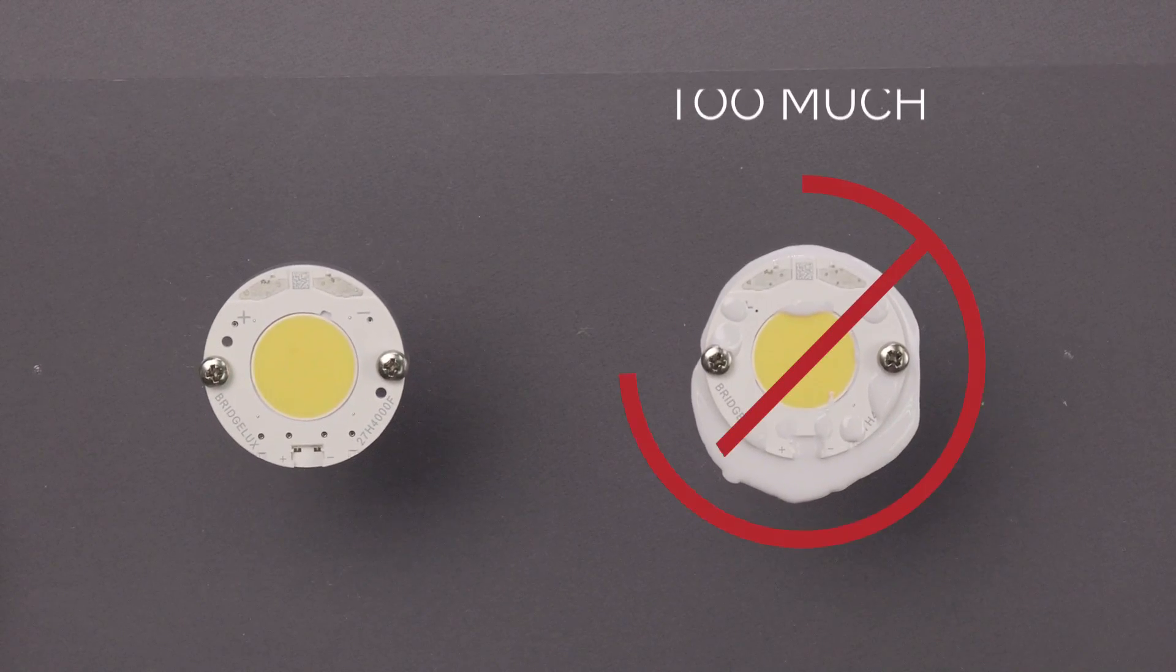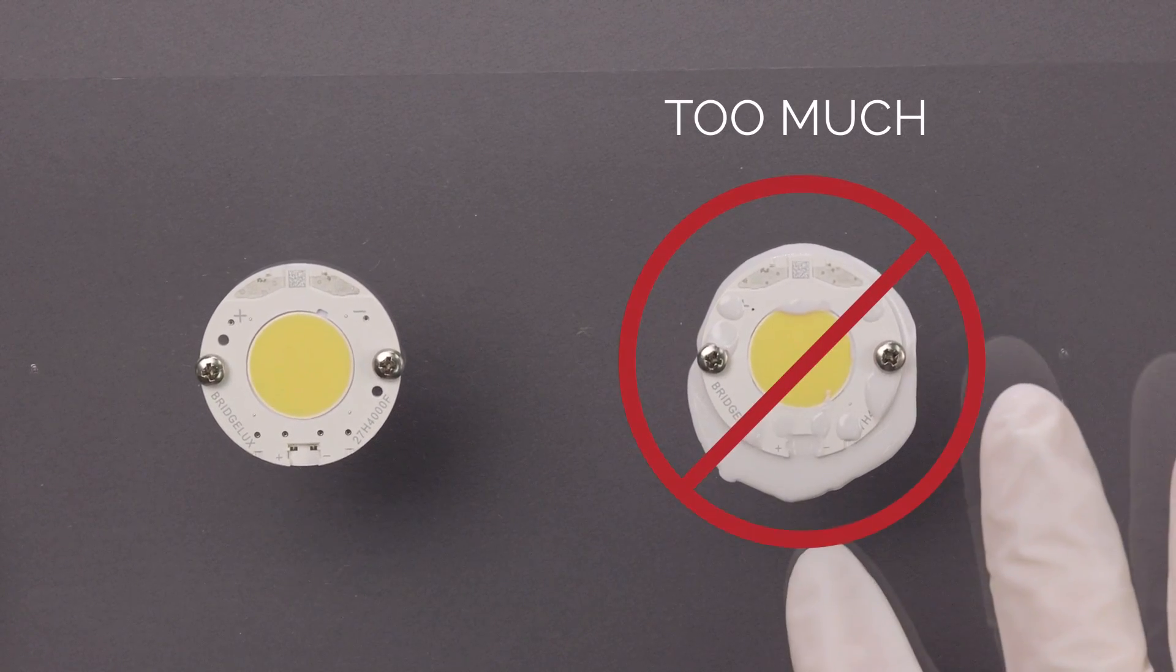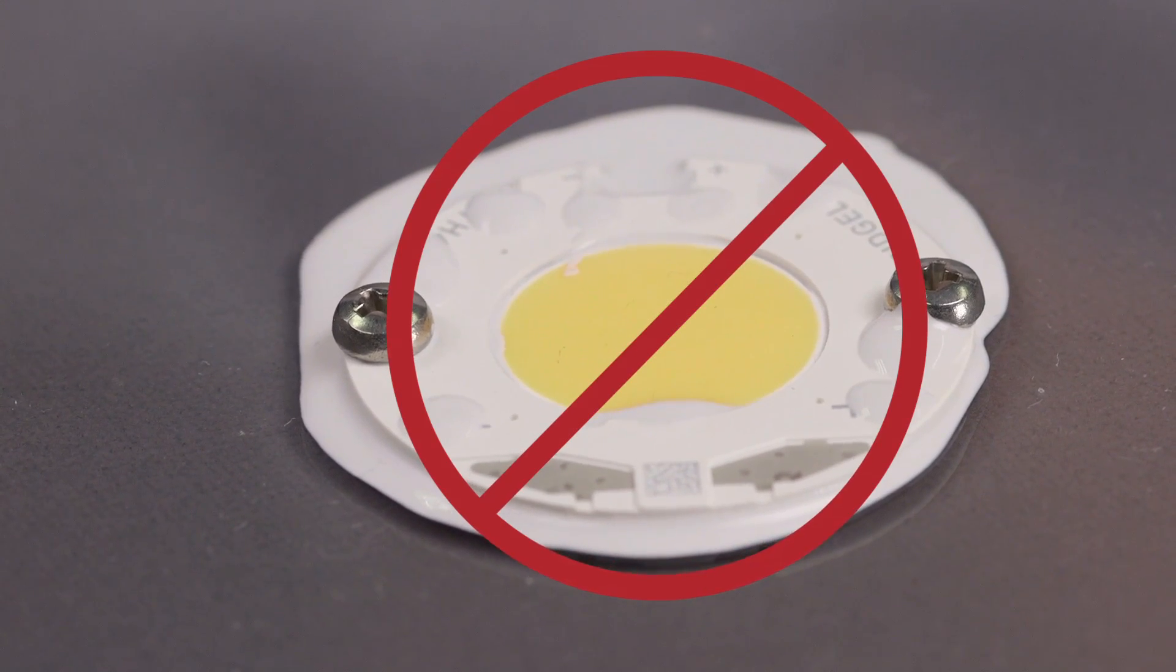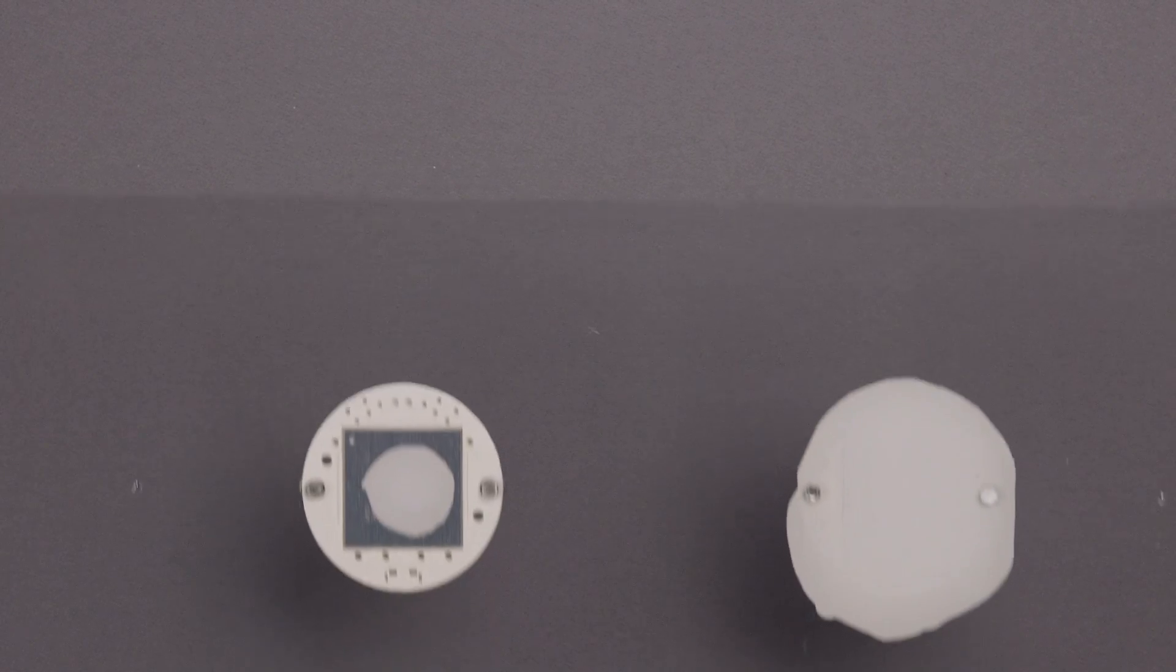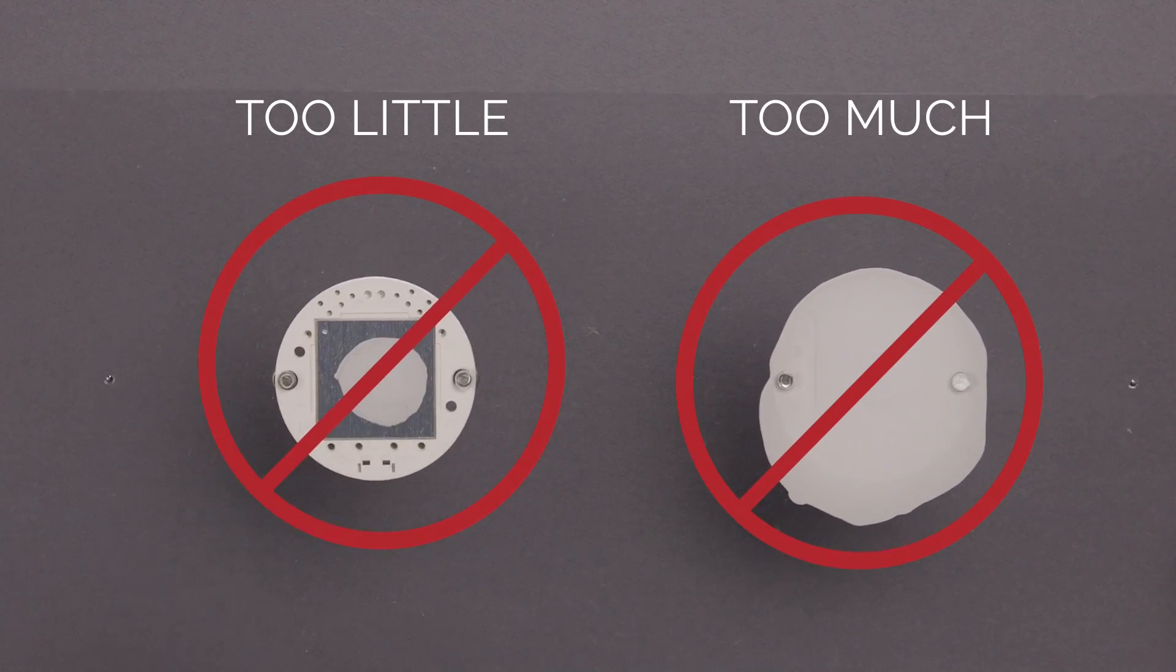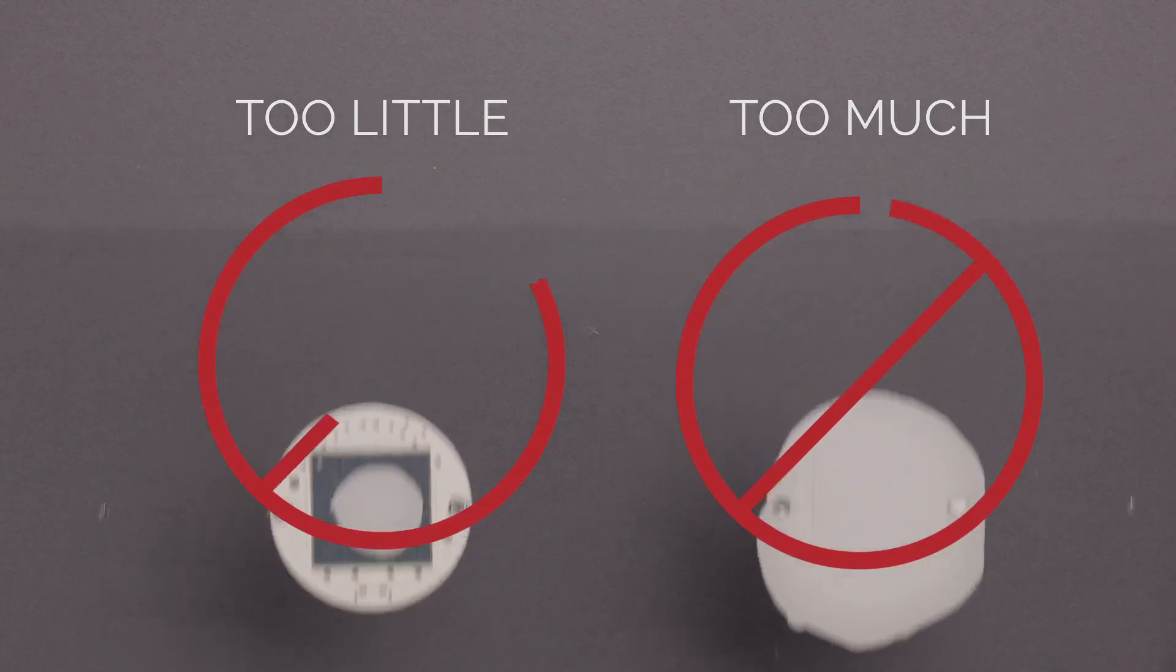As with thermal pads and phase change materials, the thickness or quantity of thermal grease must be carefully measured. Too much can cause excess grease to ooze out of the side holes and edges. Too little can leave gaps in thermal transfer, which can cause hot spots on the array. These hot spots can lead to catastrophic failures.